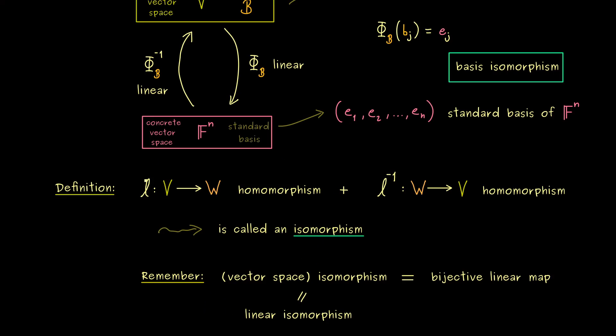It tells us, if we have an isomorphism between V and W, then the dimensions of V and W are the same.